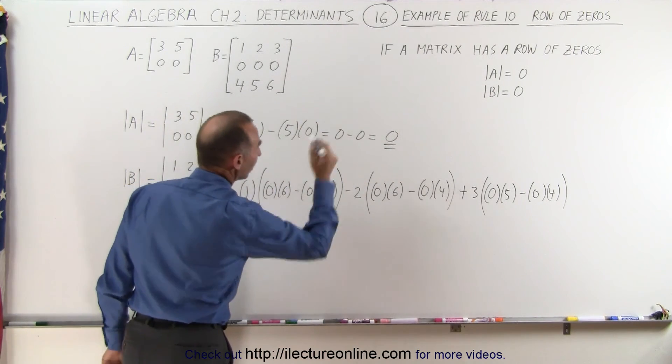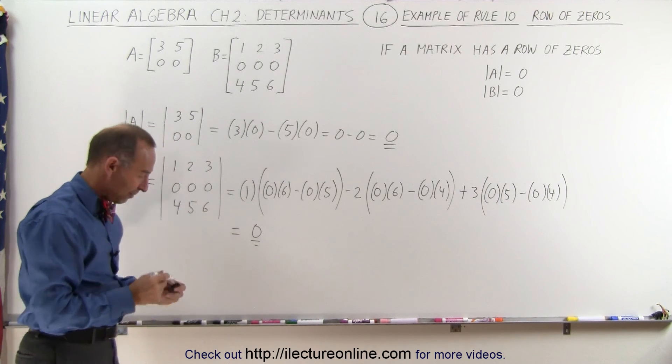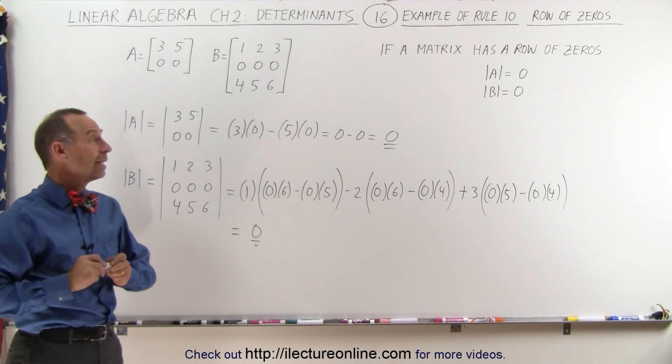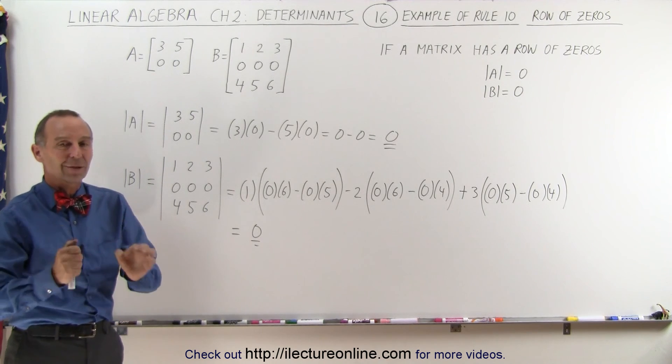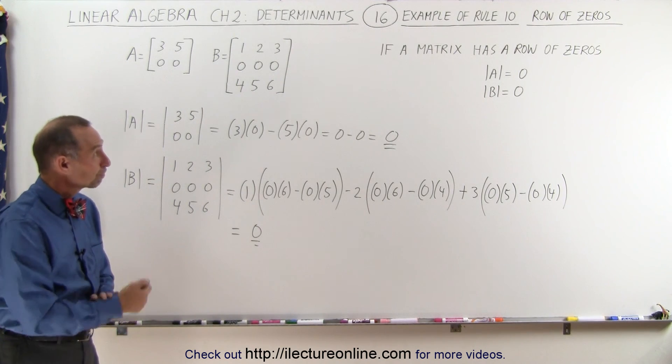And notice that whenever you have a complete row of 0 in any matrix, then when you take the determinant of the matrix you will end up with a 0 result, and that's the rule.